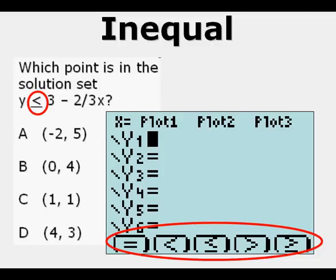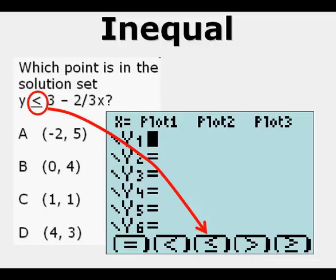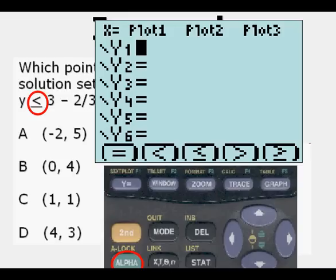We see that we have a less than or equal to option, which is the same as the inequality we're trying to evaluate. So we access that by first pressing the ALPHA key. Remember that. Press the ALPHA key first to access those signs. Then we press the ZOOM key, which is right below the less than or equal to sign.